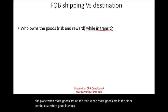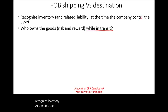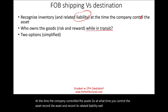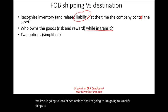You're supposed to recognize inventory at the time the company controls the asset. So at what time do you control the asset, record the asset, and record its related liability? We're going to look at two options, and I'm going to simplify things to illustrate the concept of FOB shipping and FOB destination.